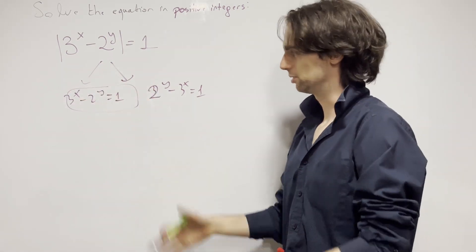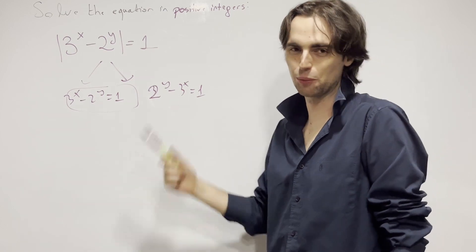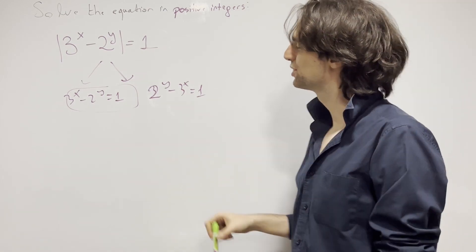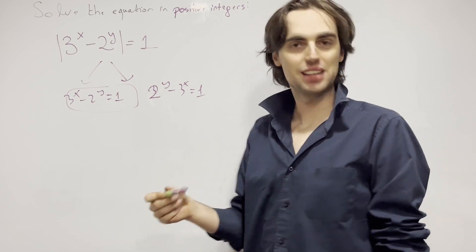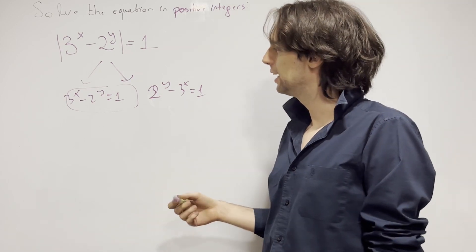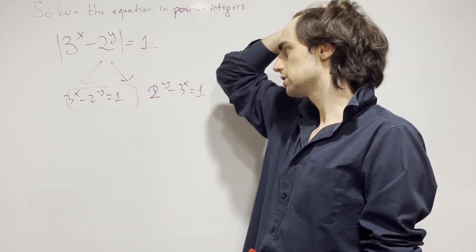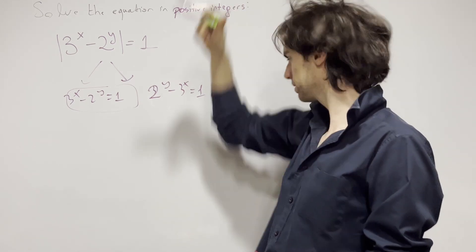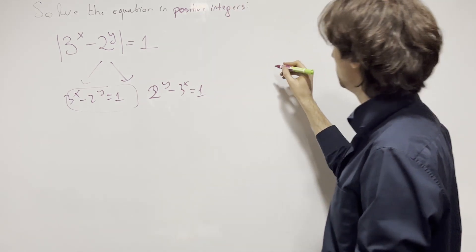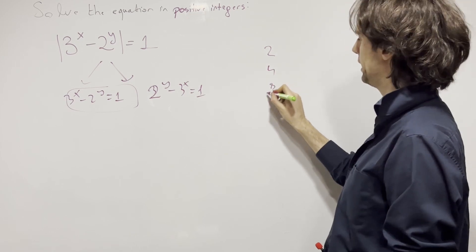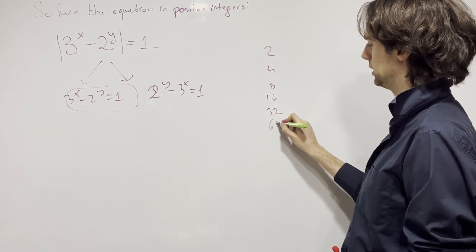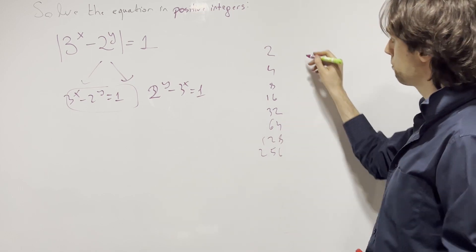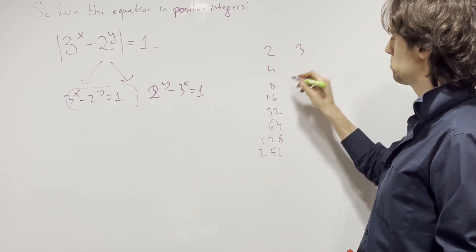It's nicer. One solution is (1,1). That's why it's nicer to me. What if y is larger? Let's actually run a couple of these down. Powers of 2: 2, 4, 8, 16, 32, 64, 128, 256.